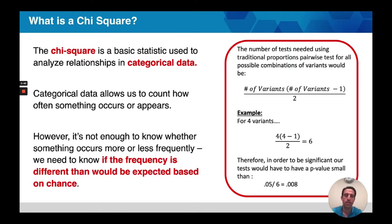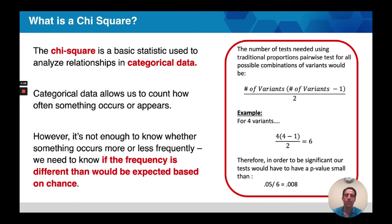For example, if I was to take a coin and flip it 10 times, we might expect it to come up 5 times heads, 5 times tails. But in the real world, a lot of times it'll come up 4 times heads, 6 times tails. But you might be very suspicious if it comes up 9 times heads and 1 time tails. A chi-square test is designed to look at these sorts of counts. And the beauty of it is that a chi-square is not limited to two categories.